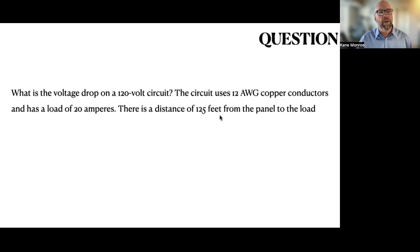So let's see if we can figure out this question. What is the voltage drop on a 120 volt circuit? The circuit uses 12 AWG copper conductors and has a load of 20 amperes. There's a distance of 125 feet from the panel to the load. So right there, that question gives you everything you need to know.